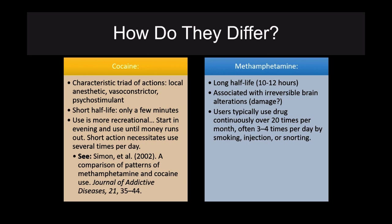We talk about the sort of weekend warrior cocaine user — goes out on the weekend, parties, goes back to work on Monday. Whereas methamphetamine is associated with irreversible brain damage with relatively low use. Users typically use the drug continuously, over 20 times a month, often three to four times per day, smoking, injecting, or snorting — all of these are potential ways in which methamphetamine is used.